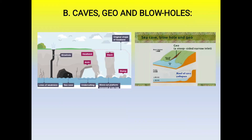The next feature is blowholes. Sometimes, due to differential resistance of rocks, the whole roof of the sea cave does not collapse, but only some part of it collapses in the form of a hole. The waves drive sea water into the caves, and part of it is forced out through the hole on the top of the cliff roof.